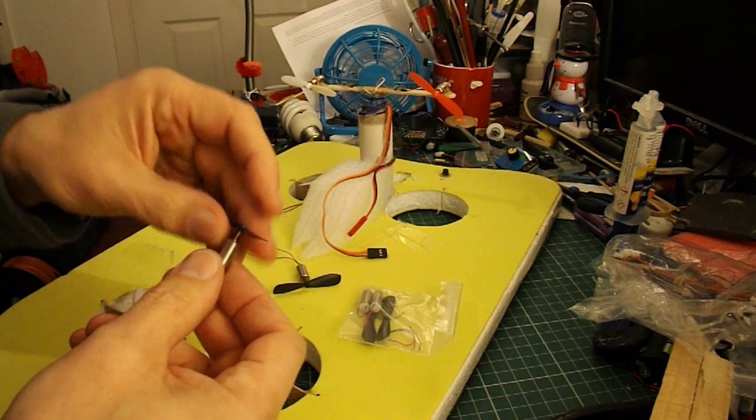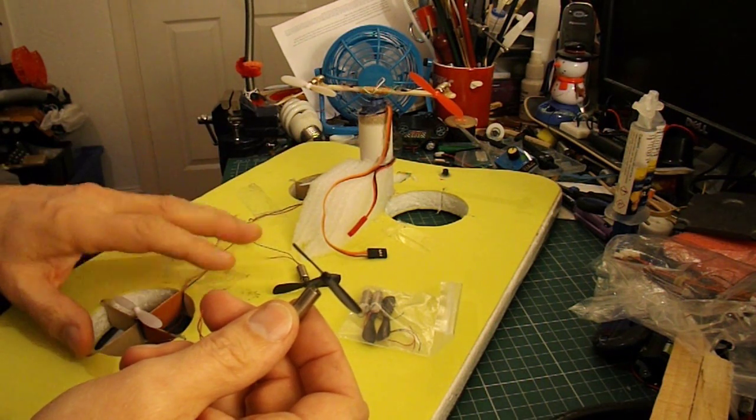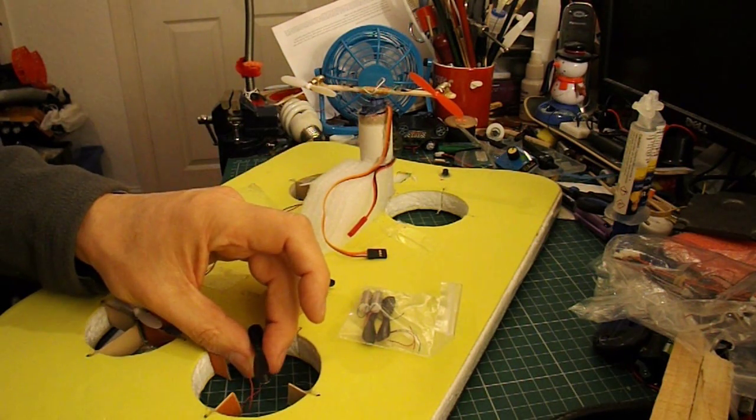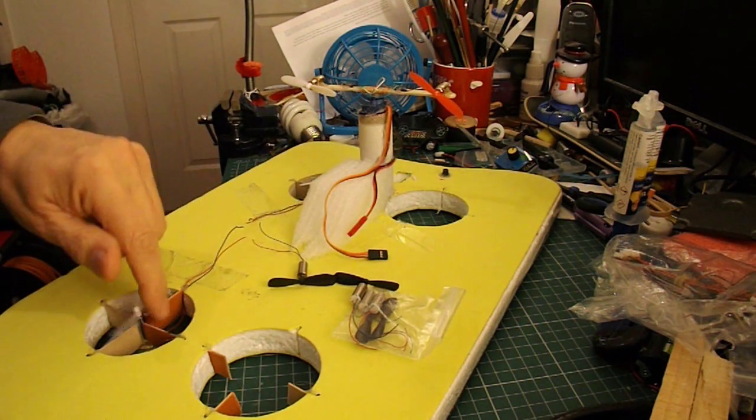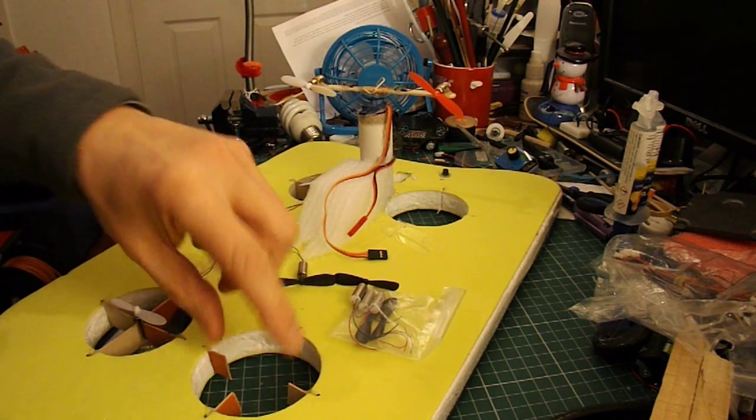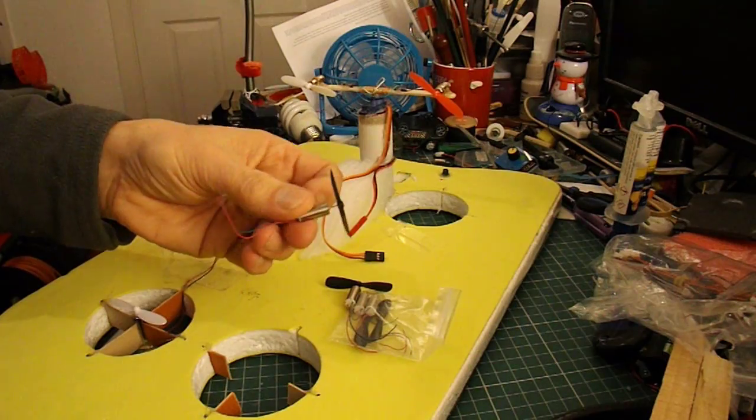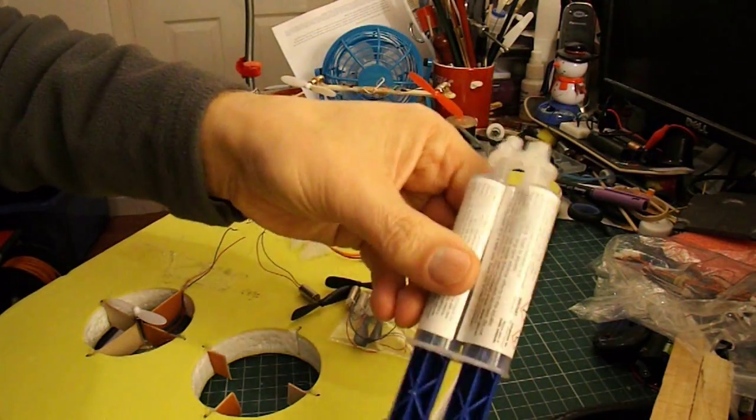They're actually slightly smaller than the motors I had in there, but I was overpowering it, so maybe the smaller motors will be okay. So I need to make up little cross brackets, and I glue them in place with 2-pack epoxy.